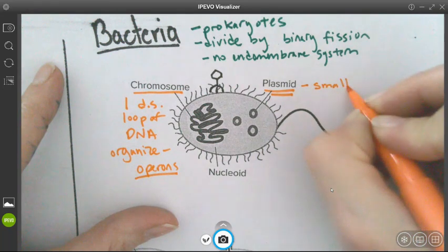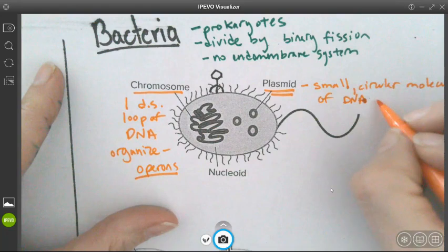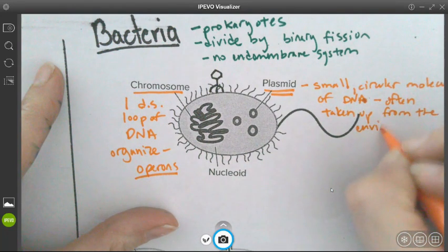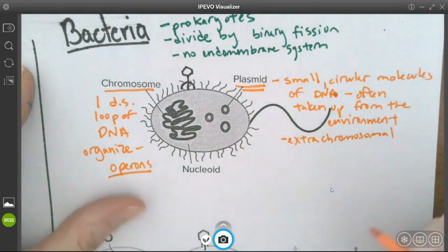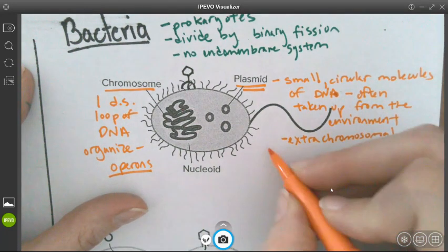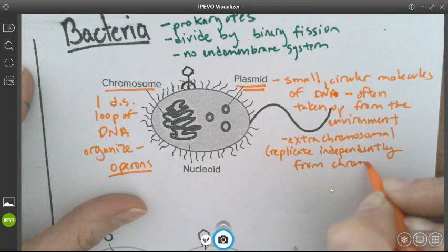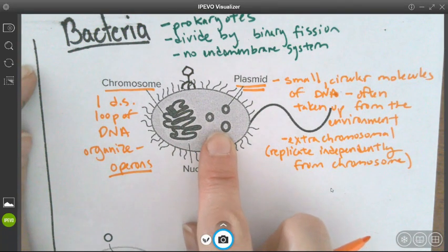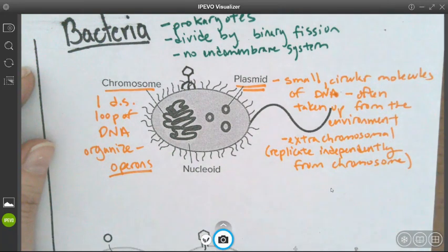So let's write that down. They're small circular molecules of DNA often taken up from the environment. And they're known as extra chromosomal because they're separate from the chromosome itself. And they replicate independently from the chromosome. And it's always really interesting to me because this is a way for bacteria to increase their genetic variation and to rapidly respond to changing environmental conditions. When they take up these plasmids, those often have genes in them that make them antibiotic resistant or able to share information. So these help with the ability of prokaryotes to do a lot of different things.